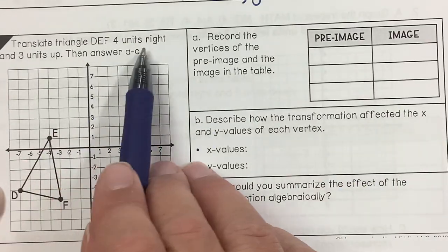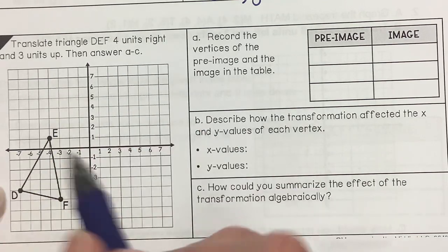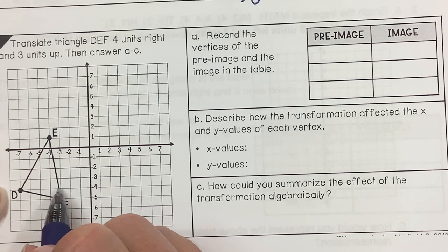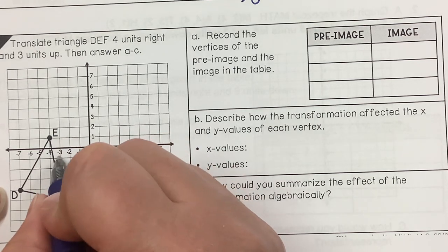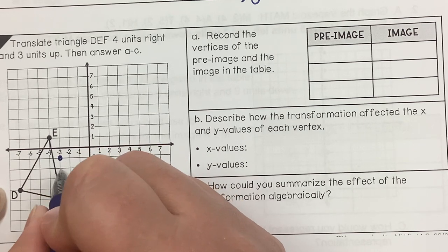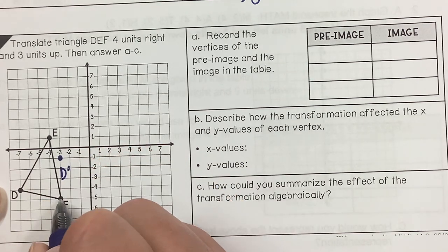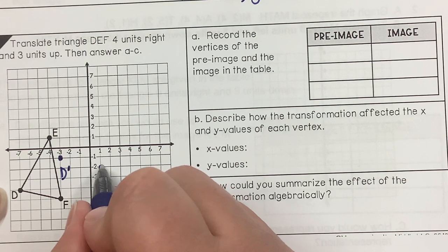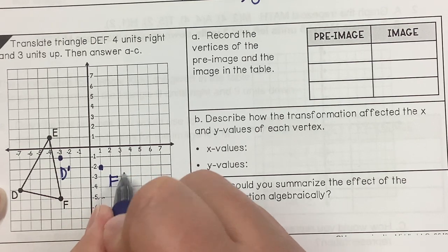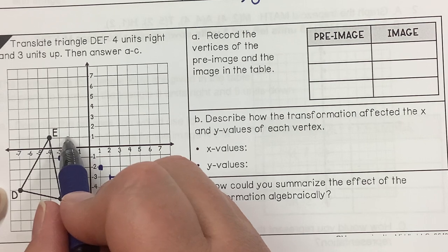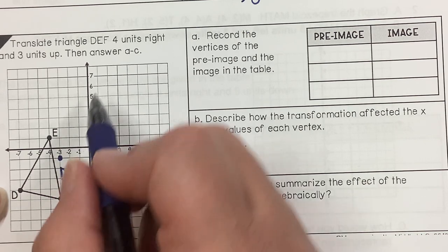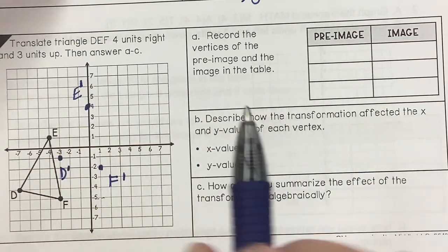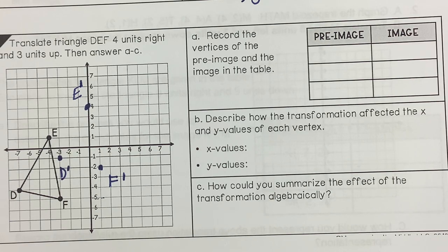Let's translate triangle DEF 4 units right and 3 units up. Let's do D first: 1, 2, 3, 4 units right; 1, 2, 3 units up — that's D prime. Now F: 1, 2, 3, 4 units right; 1, 2, 3 units up — that's F prime. And E: 1, 2, 3, 4 right; 1, 2, 3 up — way up there for E prime. I should have done them in order — D, E, F.